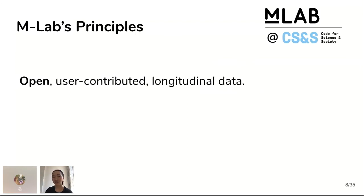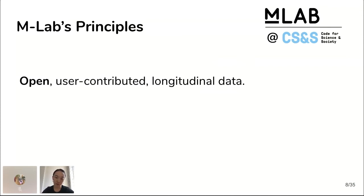I'm a little bit preaching to the choir here, but open data is really important, specifically within internet performance research. When decisions are being made that affect consumers' internet, we believe the source of that research and analysis should come from an open data source where everyone can see the numbers that were used to calculate the other numbers. So open is part of our methodology — we have open data and all of our code is open source.